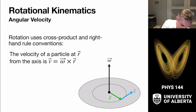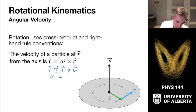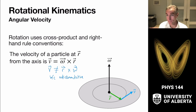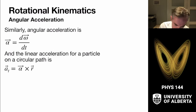Note: v as a vector does not equal r cross omega, because the cross product is anticommutative — it does not go backwards and would point in the wrong direction. Don't do that. It's always omega cross r.